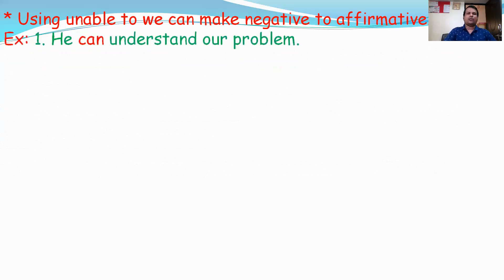Example: He can understand our problem. In this sentence, 'can' represents present tense. Can is affirmative, so we use able to. What should we use? Since 'can' represents present tense, we use am/is/are. For 'he,' we use 'is.' The answer is: He is able to understand our problem.